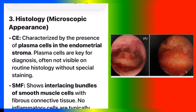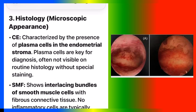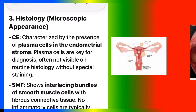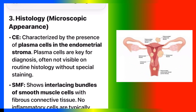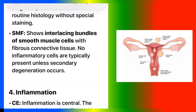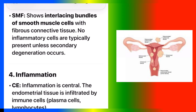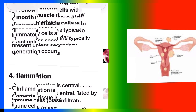Number three: histology — microscopic appearance. CE is characterized by the presence of plasma cells in the endometrial stroma. Plasma cells are key for diagnosis, often not visible on routine histology without special staining. SMF shows interlacing bundles of smooth muscle cells with fibrous connective tissue. No inflammatory cells are typically present unless secondary degeneration occurs.